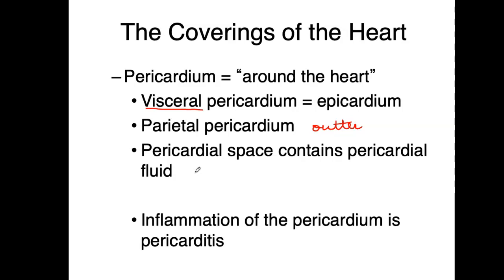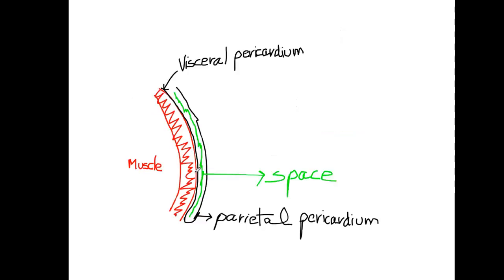You may have heard the term pericarditis — that's the inflammation of the pericardium. To recap: the muscle is covered by the visceral pericardium, something very attached onto the muscle. As it curves around, it forms a second layer — the parietal pericardium. What's in between is the pericardial space.